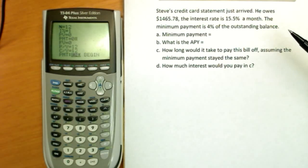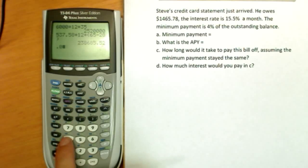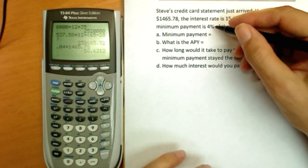So we're back. You've worked the problem. We're going to take a look at it. Minimum payment: we don't need the financial calculator for this. Simply 4% or 0.04 times the balance of $1,465.78. We get a minimum payment of $58.63.